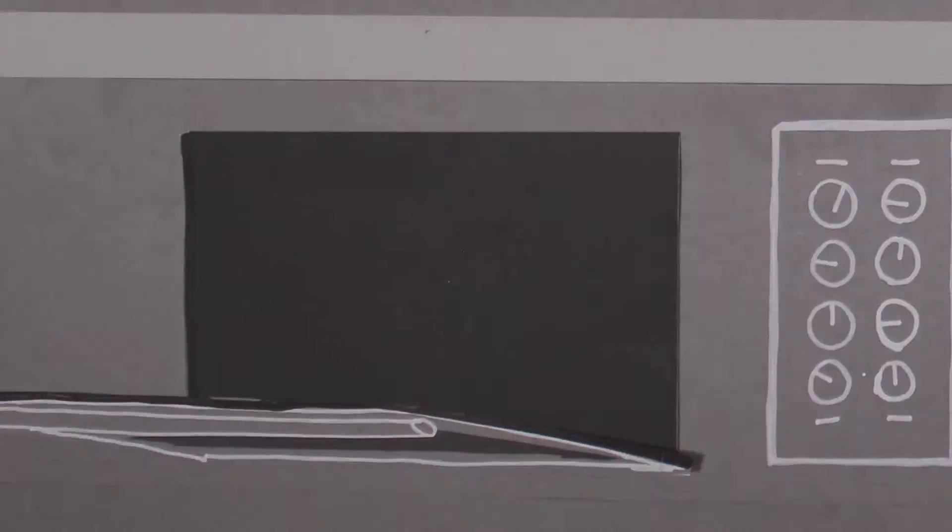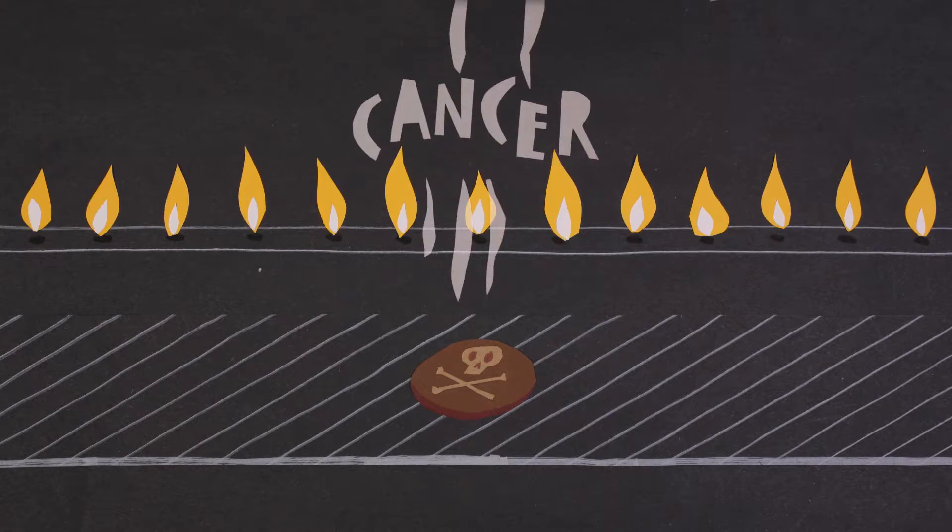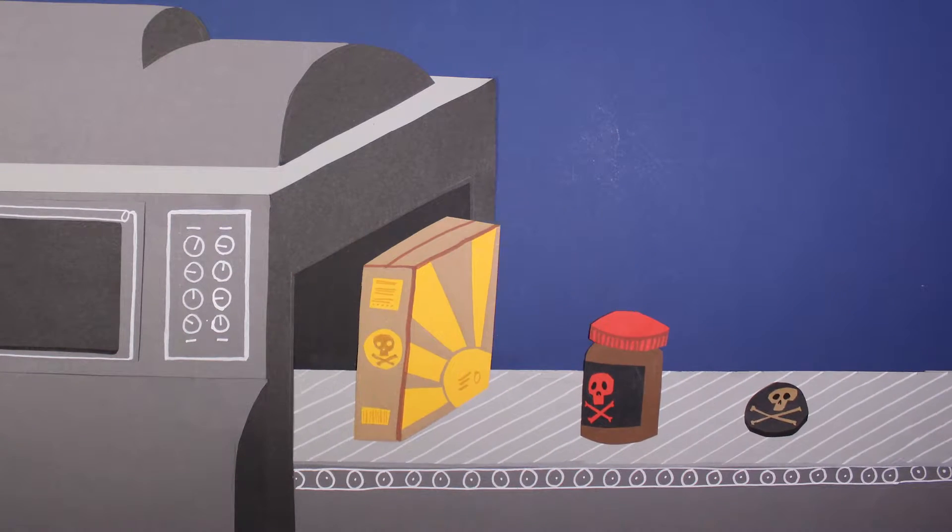Acrylamide is a carcinogenic chemical that occurs when starch-rich foods are heated up. It appears in things you eat every day like biscuits, coffee, cereals and bread.